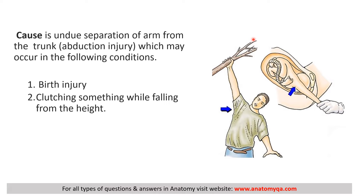The cause of Klumpke's paralysis is undue separation of the arm from the trunk — a hyper-abduction injury. This can occur when a person is falling and grabs onto something like a branch of a tree: the body moves downward due to gravity while the hand clutches the object, causing hyperabduction and stretching or injuring the lower trunk of the brachial plexus. Another cause is birth injury during vaginal delivery when the hand is pulled and unduly abducted.